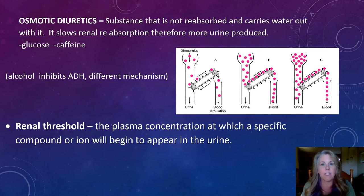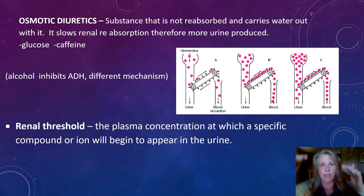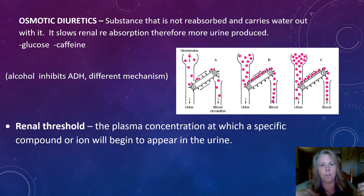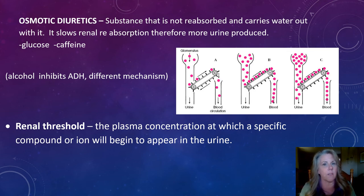Pharmaceutical companies need to determine how high a medicine's concentration has to be in order to exceed the transport maximum and start to appear in the urine. The next time you get a medicine with a package insert, look for the renal threshold listed there — it tells you the plasma concentration at which the drug will exceed the transport maximum and become detectable in the urine.